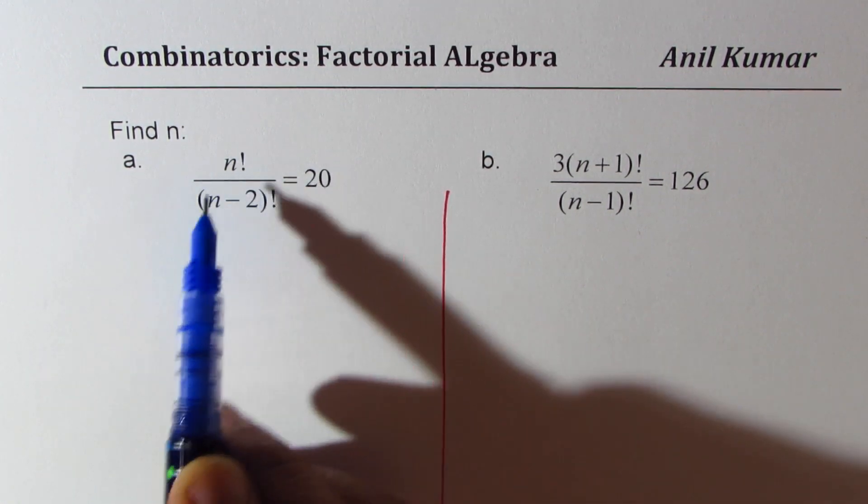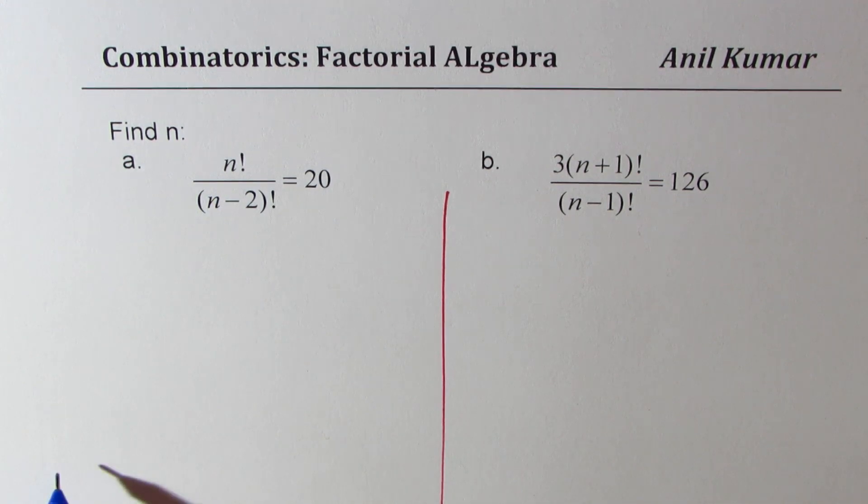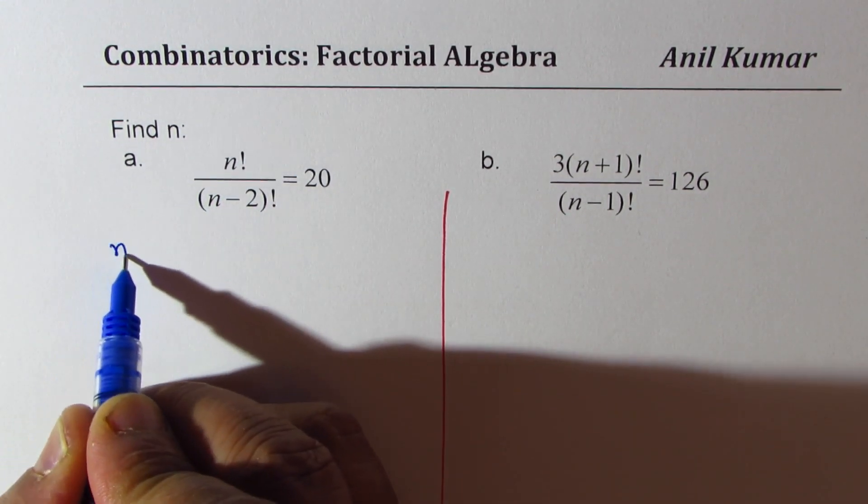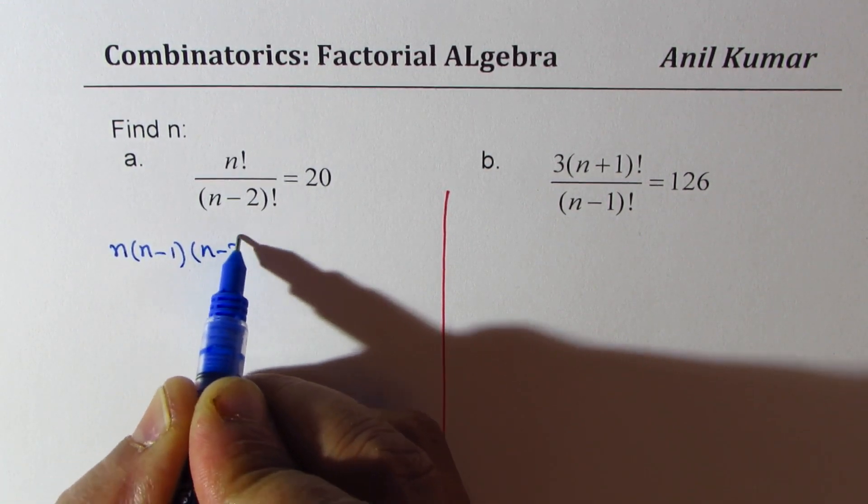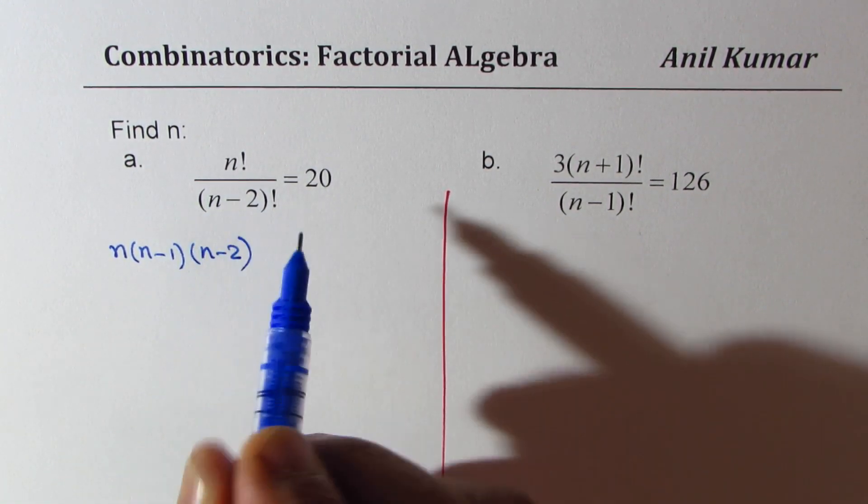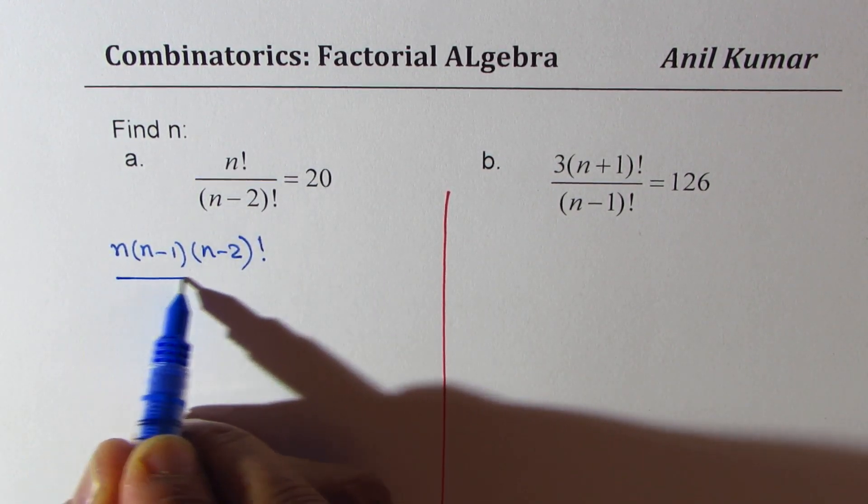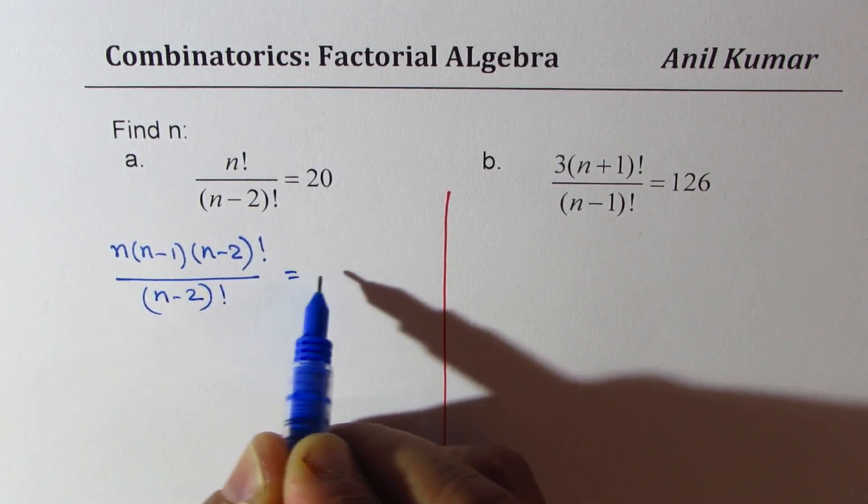Now, we'll rewrite the factorial terms to simplify the expression on the left side. n factorial could be written as n times (n-1) times (n-2). Since there is (n-2) in the denominator, we can write this as (n-2) factorial over (n-2) factorial equals 20.